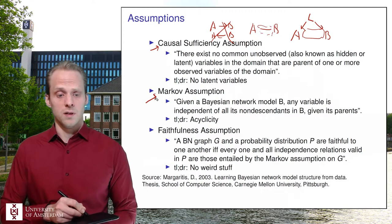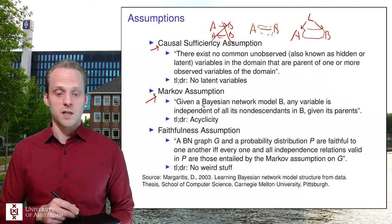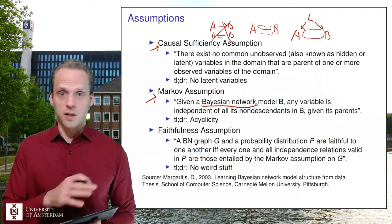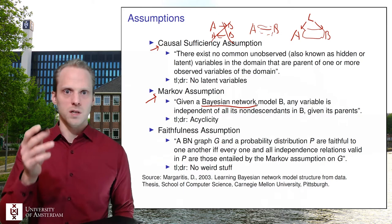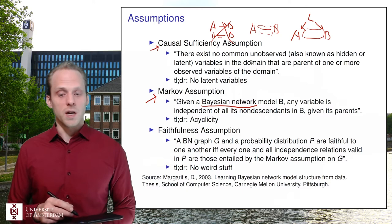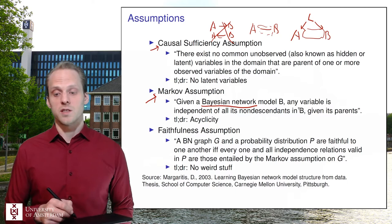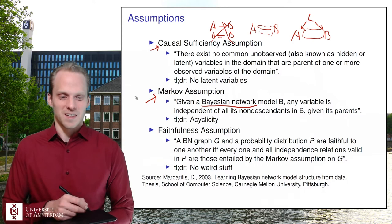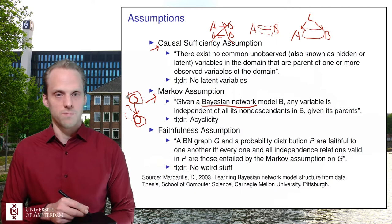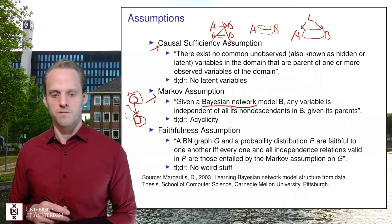The second assumption is the Markov assumption. A Bayesian network, by the way, is just another name for a directed acyclic graph — it has nothing to do with Bayesian statistics. It has more to do with the idea that A causes B and B causes C means A can update B and B can update C. Given a Bayesian network or DAG, any variable is independent of its non-descendants given its parents. This is essentially assuming acyclicity — no arrows going back, so a node is not a parent of its own parents.